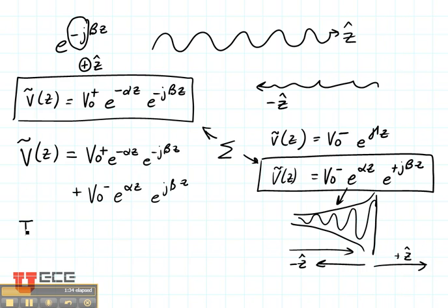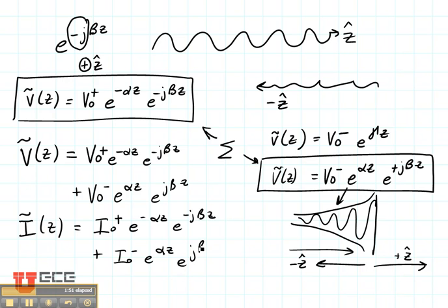Now let's look at what the current would be. The current would have a very similar equation. It would be I0 plus e to the minus alpha z e to the minus j beta z plus I0 minus e to the plus alpha z e to the plus j beta z.